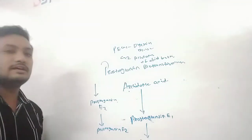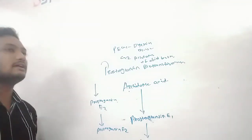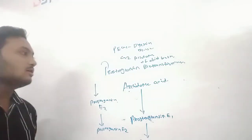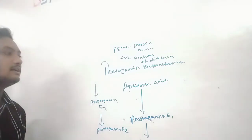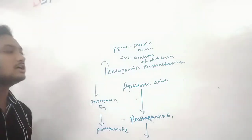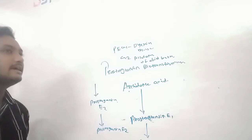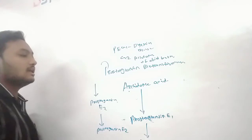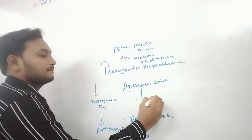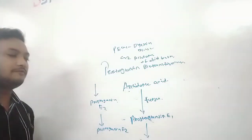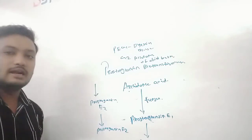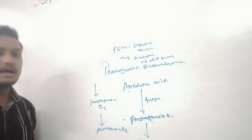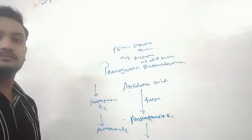As discussed in the introduction, prostaglandins contain unsaturated fatty acids with a 20-carbon long chain. They are formed from unsaturated fatty acids such as arachidonic acid, which is converted by various types of fungi into different types of prostaglandins. Here we have completed the biotransformation of the prostaglandin. Thank you for watching this video.